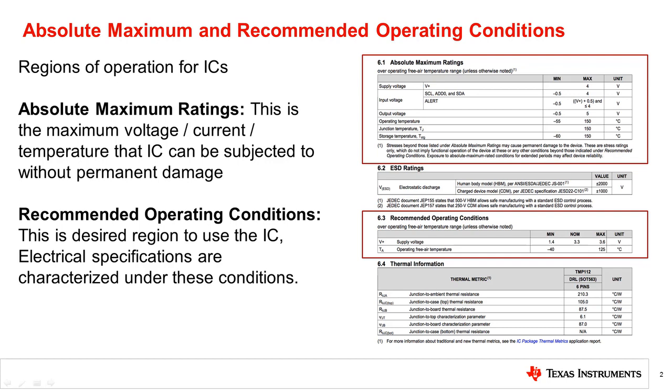When picking a device for a particular system operation, it is necessary to look at the conditions that the electrical parameters are specified for. As an example, the output parameter of a device may be specified at a supply voltage of 3.3 volts and ambient temperature of 25 degrees Celsius.